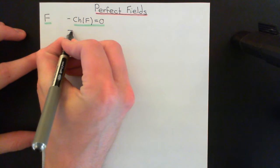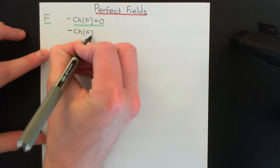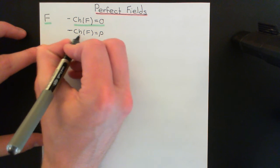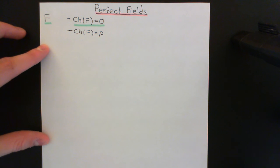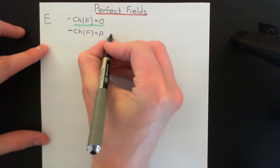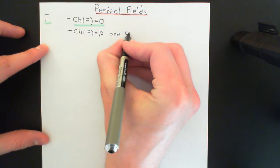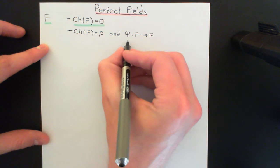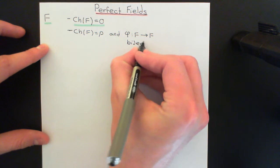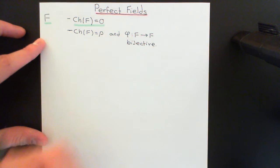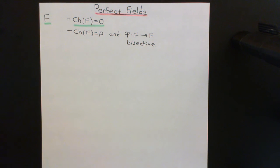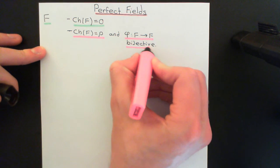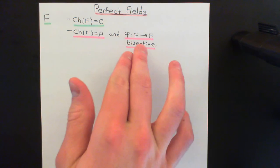The other criterion is that the characteristic is not equal to zero but instead equal to a prime natural number. If you have characteristic equal to a prime natural number, you also have to obey something additional: the Frobenius endomorphism acting on this field of characteristic p must be bijective if this field is to be considered a perfect field.